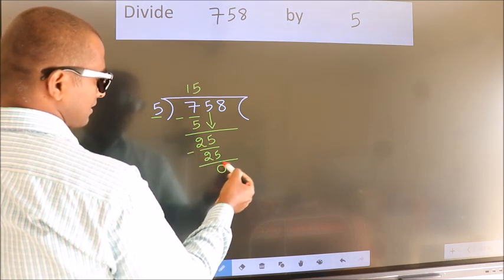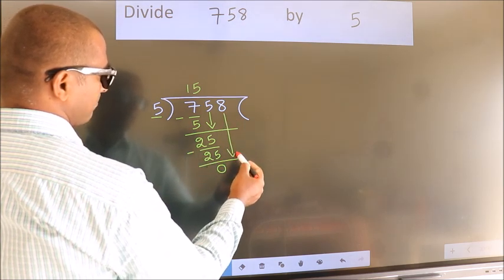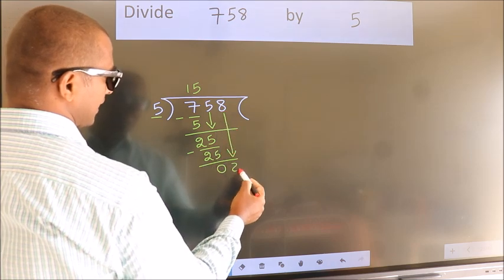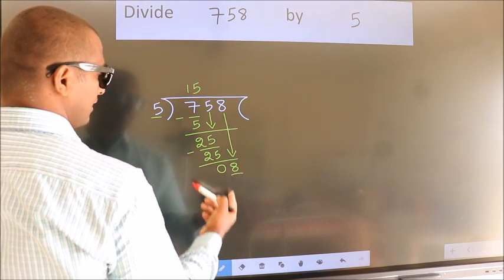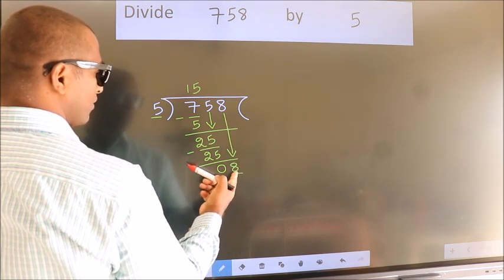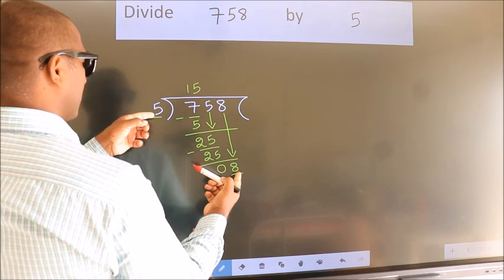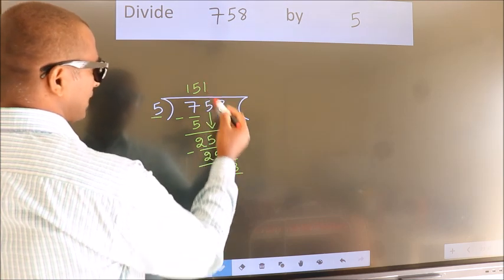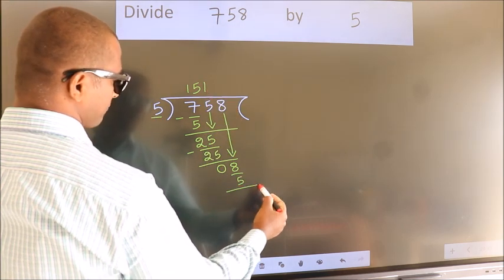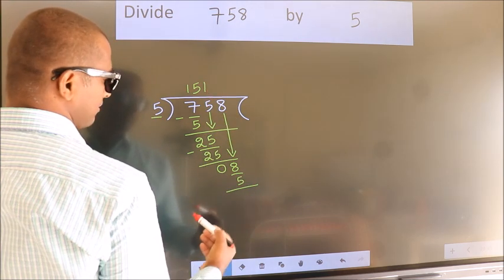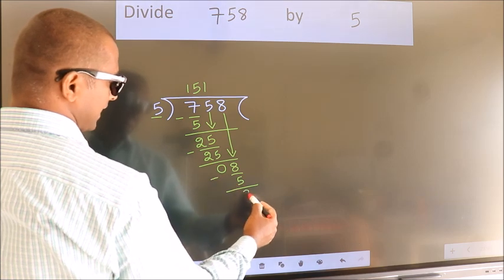After this, bring down the beside number. So, 8 down — we get 8. A number close to 8 in the 5 table is 5 once, which is 5. Now we subtract. We get 3.